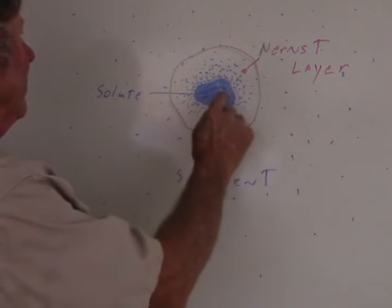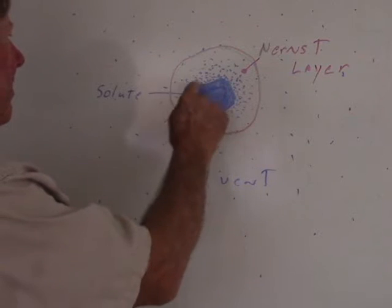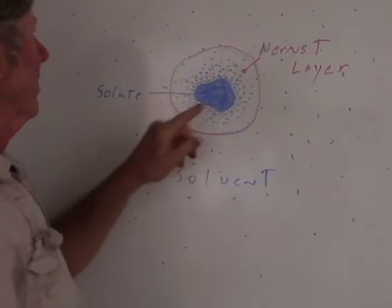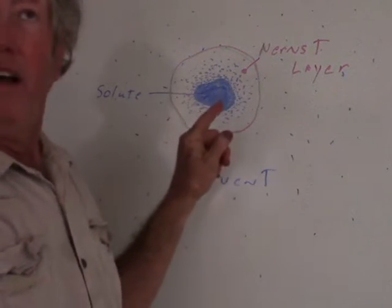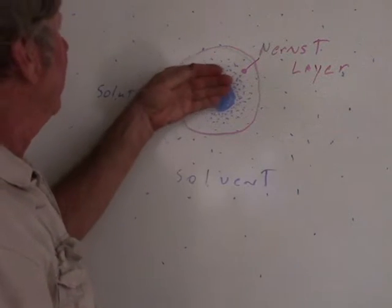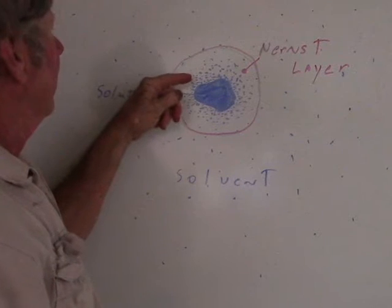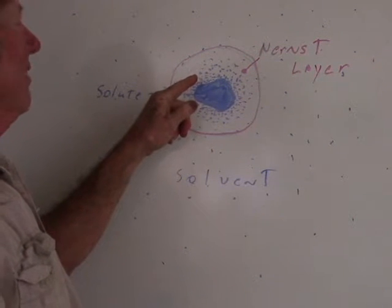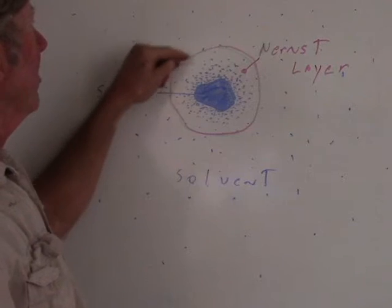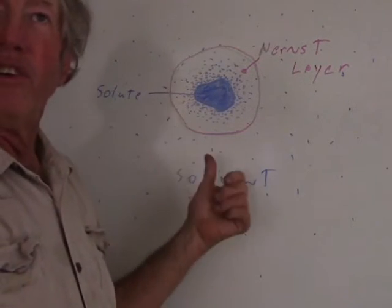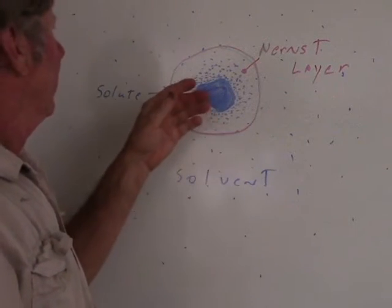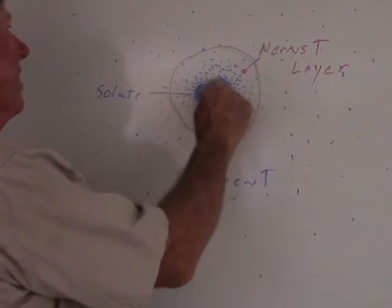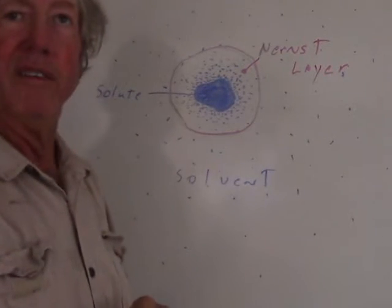As the solvent gets to the solute, or as the liquid gets to the solid, it starts dissolving. At the boundary where the solid meets the liquid, you'll have the highest concentration of dissolved particles, and as you get farther and farther away, that becomes lower and lower concentration. The area between the surface of the solid and where the concentration reaches that of the bulk liquid is called the Nernst layer. And if things aren't moving very much, that Nernst layer is going to be very concentrated at the surface and it's going to really slow down the dissolution.